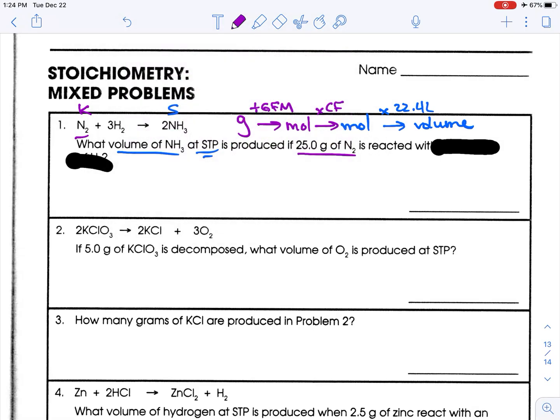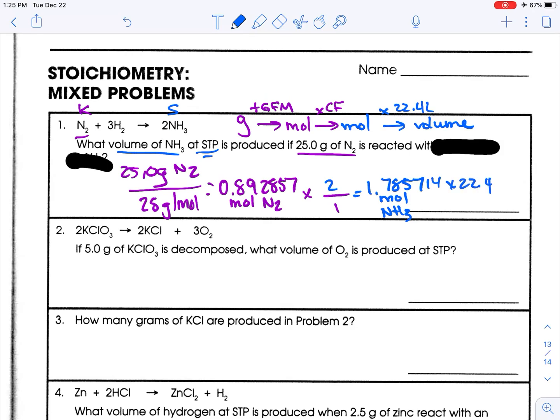All right, so here we go. 25 grams N2. I need to divide by the GFM. Nitrogen is a mass of 14, and there are two of them, so 28. So 25 divided by 28 grams per mole equals 0.89 moles of N2. Now let's figure out a conversion factor. I seek two, I know one. So what I seek is up top, so I'm going to multiply that by two, and I'm going to get 1.7857 moles of NH3. Now I need to go from moles to volume, so I'm going to multiply by 22.4 liters.